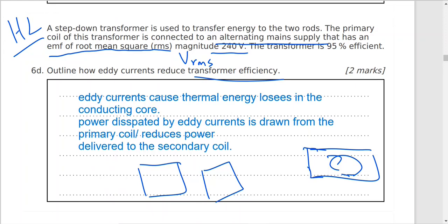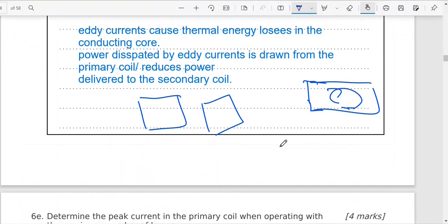How can we eliminate eddy currents? By using lamination. So we laminate, we use insulated material to eliminate the coil. So eddy currents will cause thermal energy or heat loss in the coil, in the conducting core.